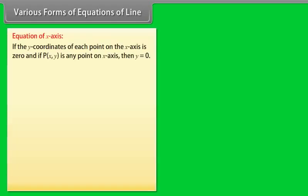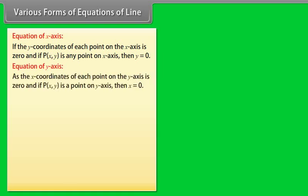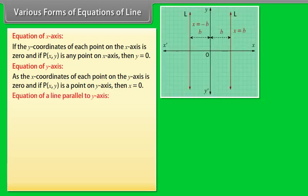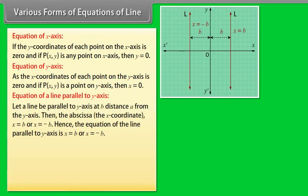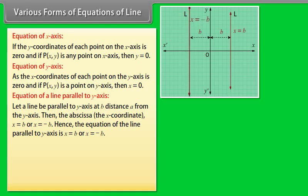Various Forms of Equations of a Line: Equation of X-axis — the Y-coordinate of each point on the X-axis is 0, so Y = 0. Equation of Y-axis — the X-coordinate of each point on the Y-axis is 0, so X = 0. Equation of a line parallel to the Y-axis at distance B from it: X = B or X = −B.